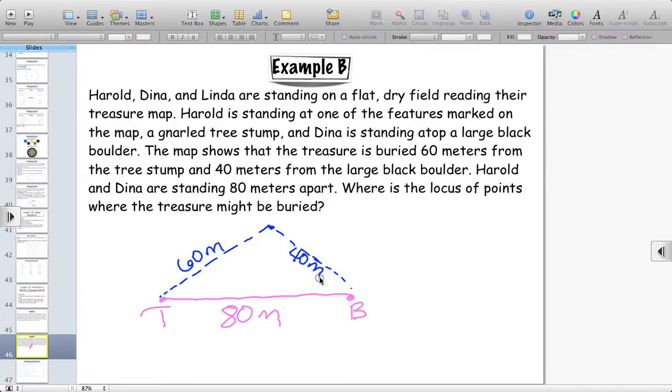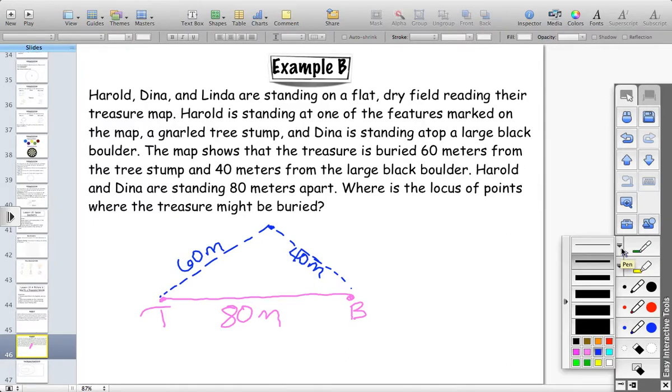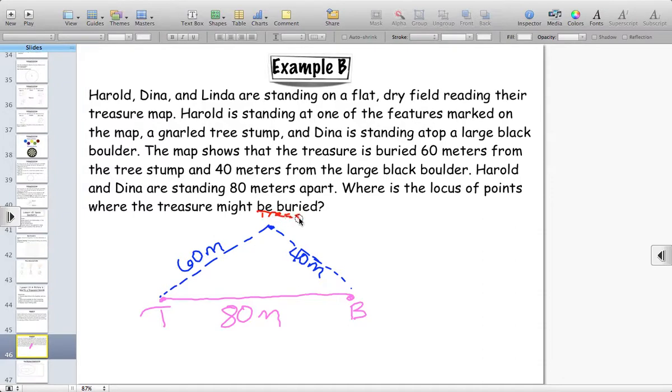And so, one way we have of figuring that out, and this is where my lack of drawing skills is going to not be in our favor, is let's imagine that the distance from the tree stump to the treasure, let's call this treasure. Can't say T, because we already have T for the tree stump. All right. The distance from the tree stump to the treasure is 60 meters.